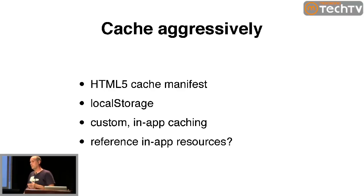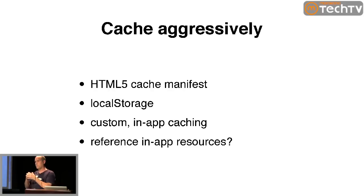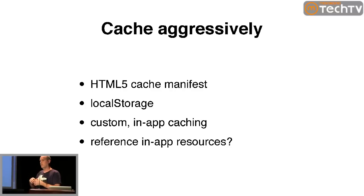Another thing we do at Tapulous, because we have this host environment, is our client engineers gave us a way to store assets locally within the app bundle on the phone. We have a system for telling the client when to get new assets, but it's a huge win — the server can tell the client to go get a new version of a JavaScript file, it stores it locally, and it never has to go over the network again until that resource has been updated. Caching is one of those tricky things to solve, but you just need to really think through your solution.